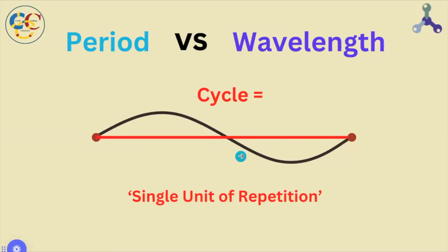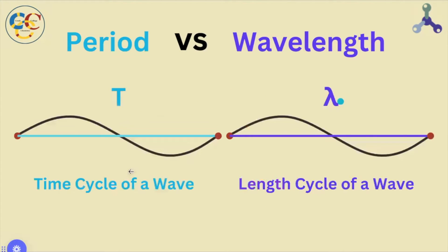Cycle is a generalized term for a wave, which is a single unit of a wave repeating itself. Period is the amount of time it takes for a wave to repeat itself, whereas wavelength is the horizontal distance or length required for this wave repetition.